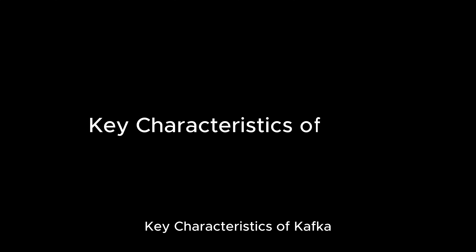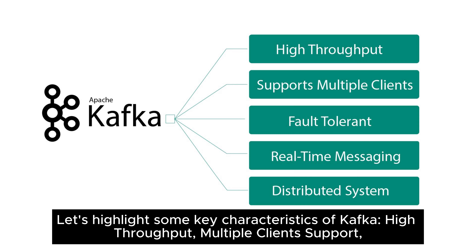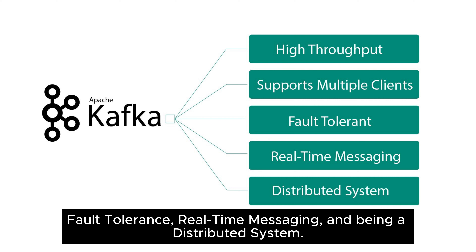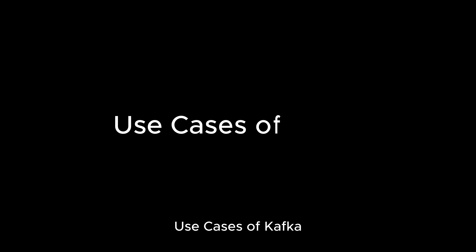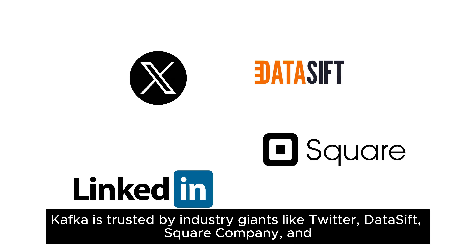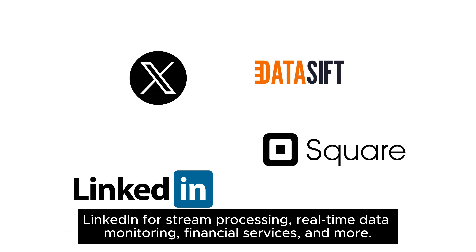Key characteristics of Kafka include high throughput, multiple client support, fault tolerance, real-time messaging, and being a distributed system. Kafka is trusted by industry giants like Twitter, Datasift, Square Company, and LinkedIn for stream processing, real-time data monitoring, financial services, and more.